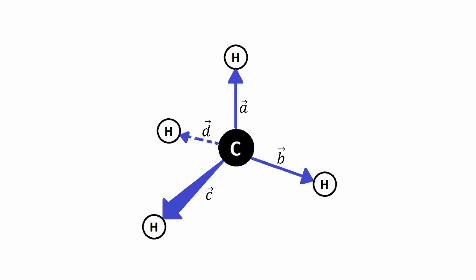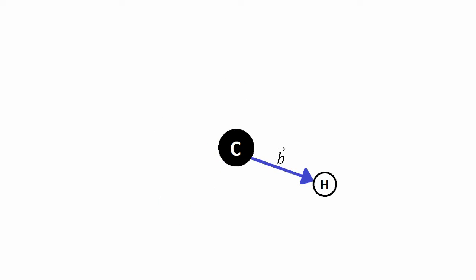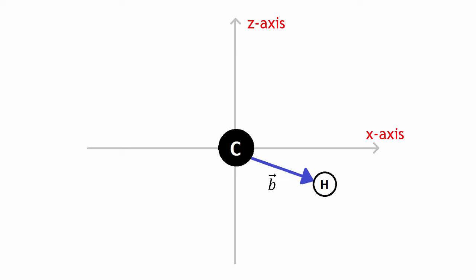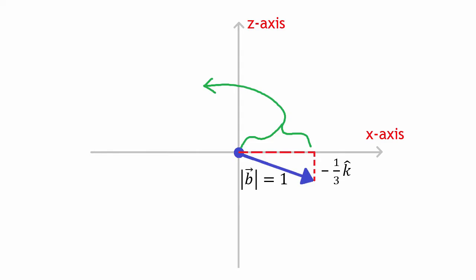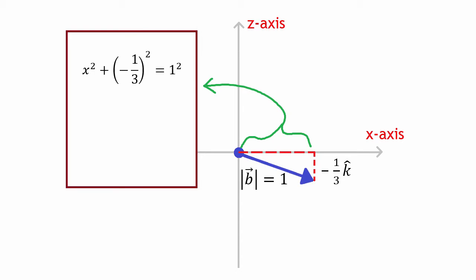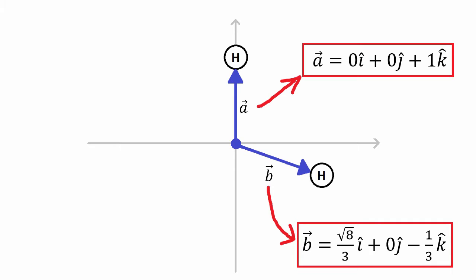To simplify further, assume one of these three remaining vectors lies in the xz plane, so its y component is zero. That vector has z component negative one-third and y component zero. Since the overall magnitude must be one, we use Pythagoras's theorem to find the x component, which comes out to the square root of 8 over 9.